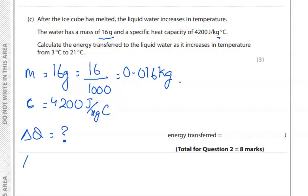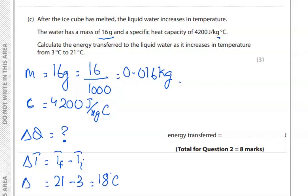We can find the change in temperature. The change in temperature is final minus initial: 21 minus 3 gives 18 degrees Celsius. So the change in temperature is 18 degrees Celsius. Now just apply the formula. The formula here is delta Q equals m times C times delta T.